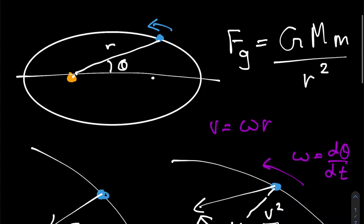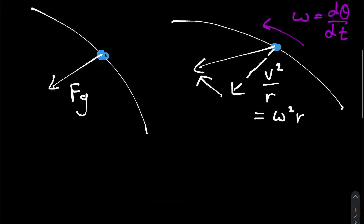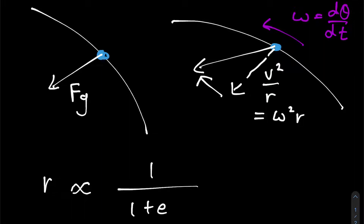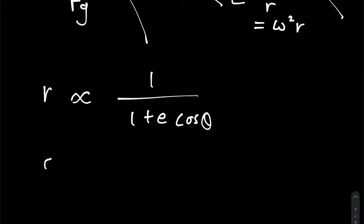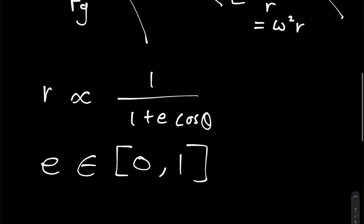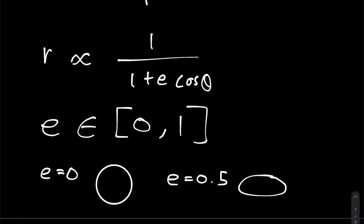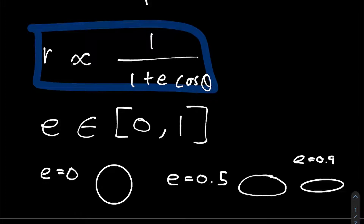Because we're trying to show that our planet traces out an ellipse, it's worth noting that the equation of an ellipse in polar coordinates looks like this: r, the distance from the sun, is proportional to 1 over (1 plus e·cosθ), where e is a scalar in the range 0 to 1 called the eccentricity. If e is 0, the ellipse is a perfect circle; if e is 0.5, it's a bit squashed; if e is 0.9, it's very squashed. If you spot this form, you're dealing with an ellipse in polar coordinates.